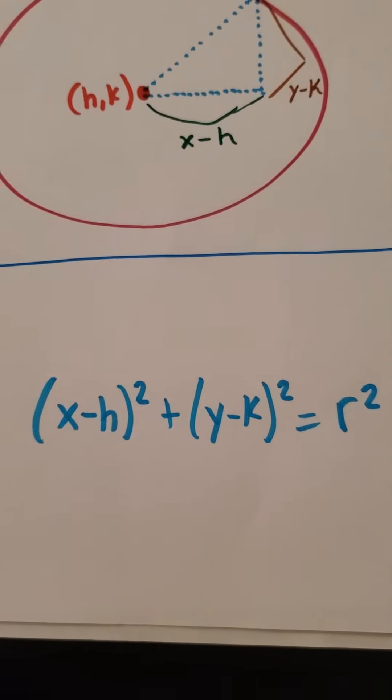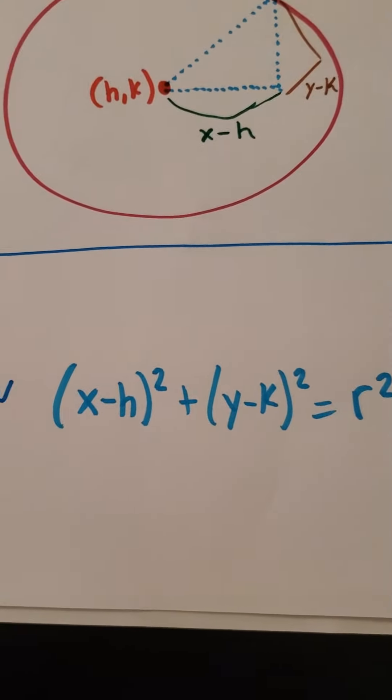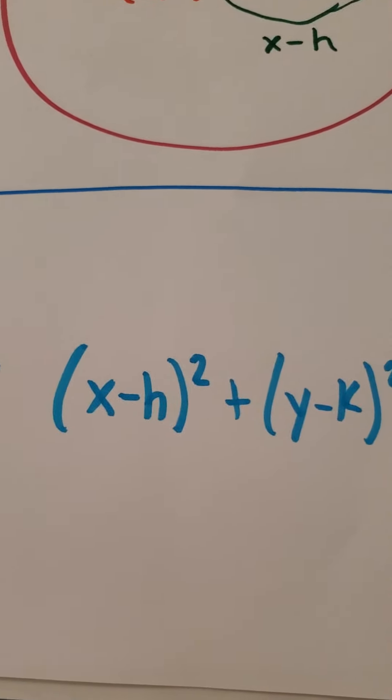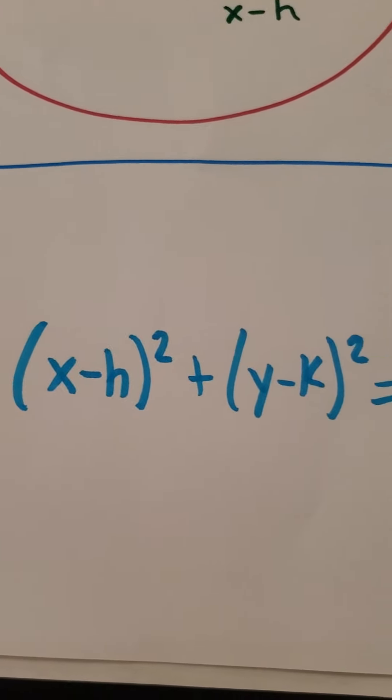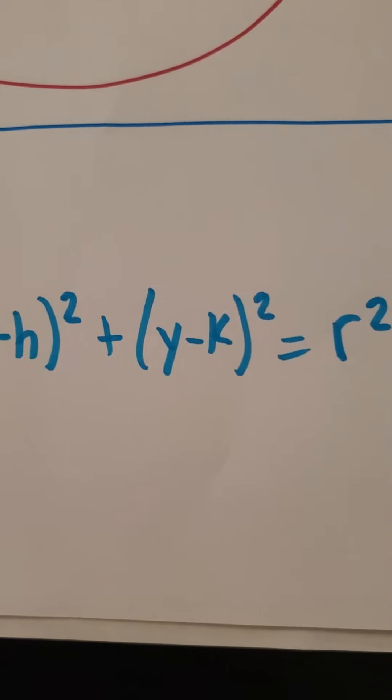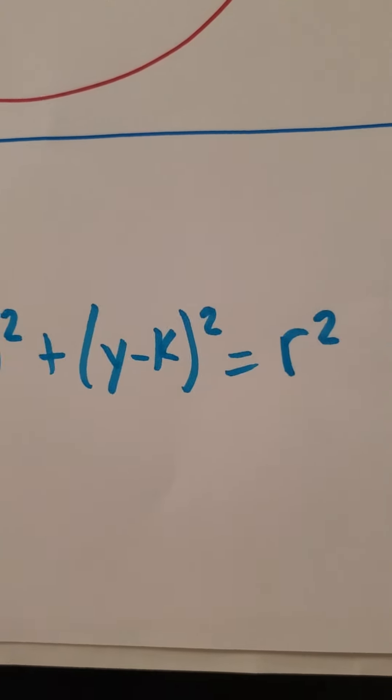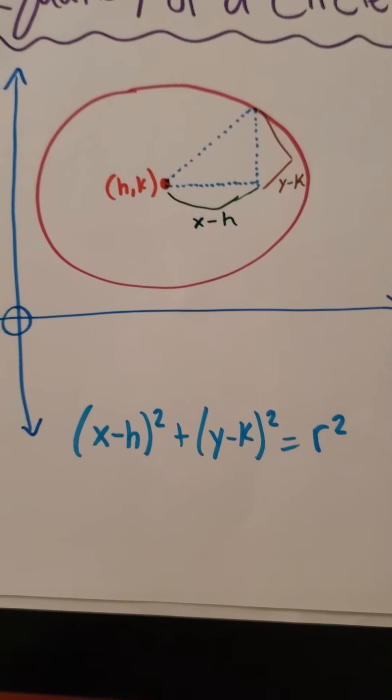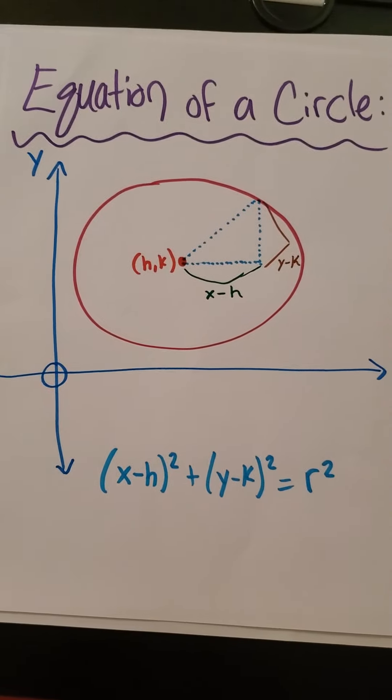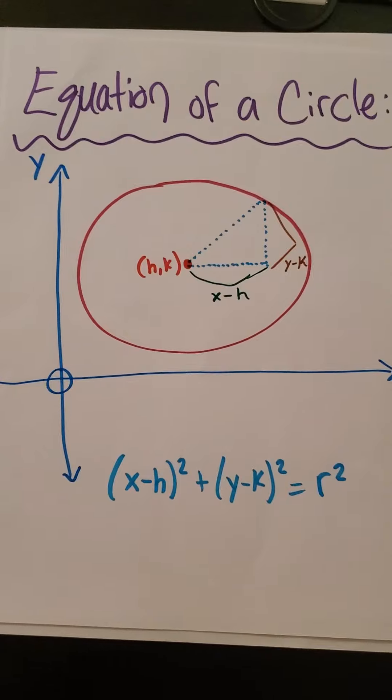So now here is our formula. We have in parentheses, x minus h squared plus, in parentheses, y minus k squared equals r squared. And there you have it. There is our equation of a circle.